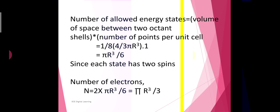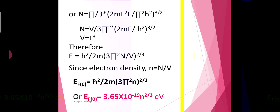The number of allowed energy states is given by the volume of the space between two octant shells of radius r and r+dr times the number of points per unit cell. This equals (1/8)(4/3)πr³ × 1 = πr³/6.